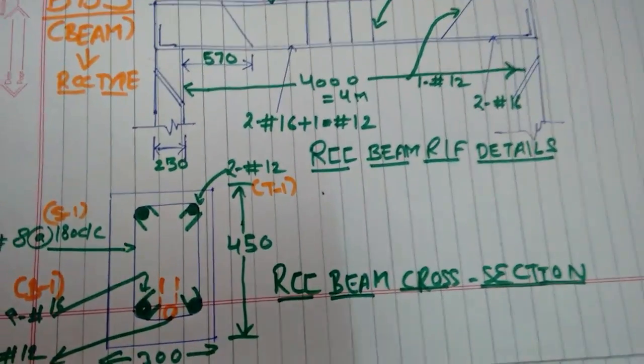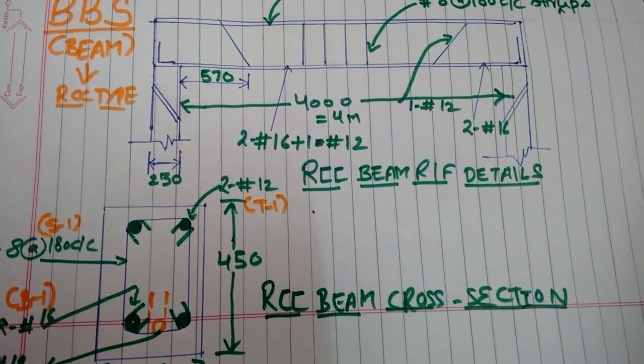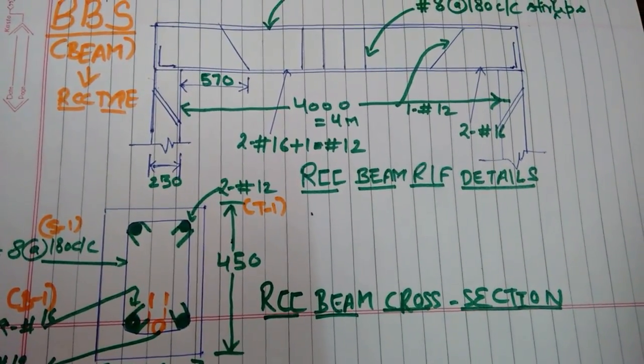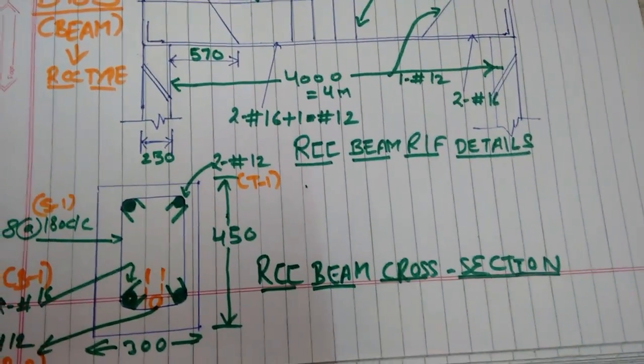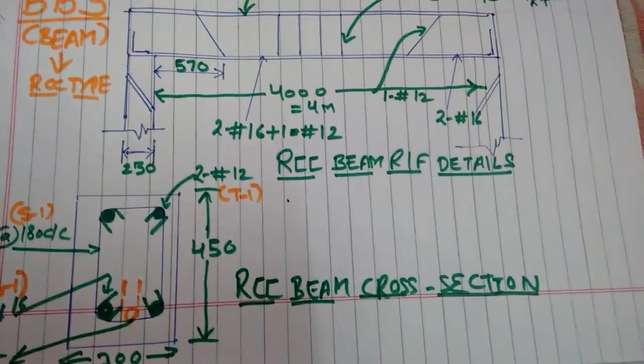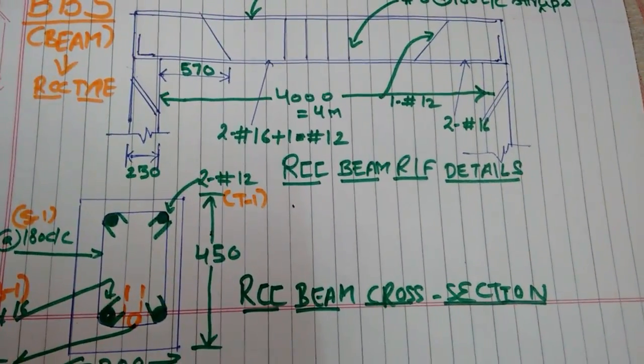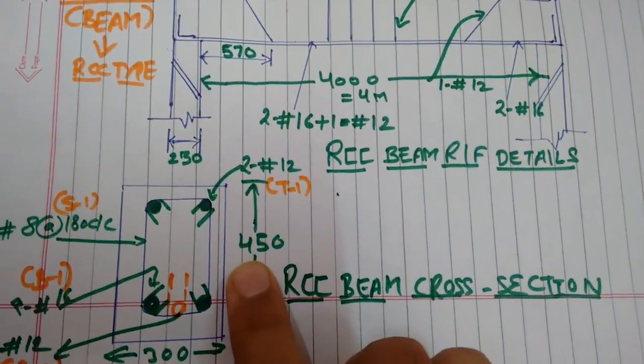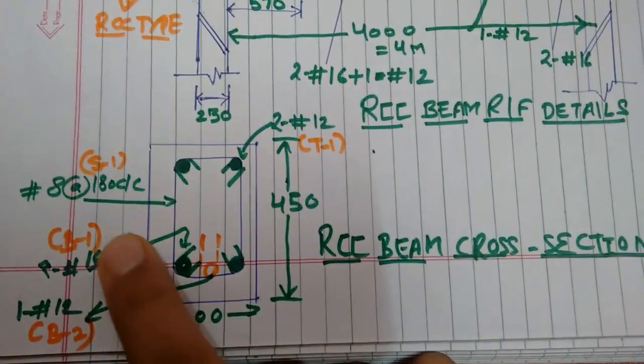This is the RCC beam cross-section we are making, and now we will calculate the length of reinforcement based on the shape of reinforcement required for reinforced concrete in the above example. So for calculating that, we have named some bars.